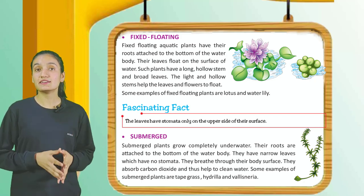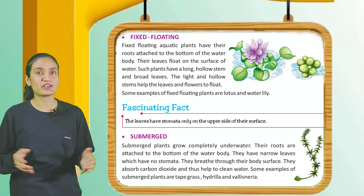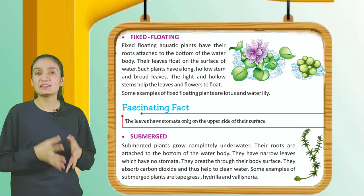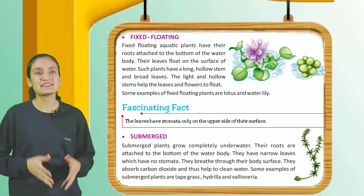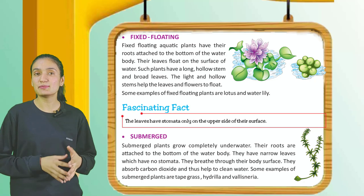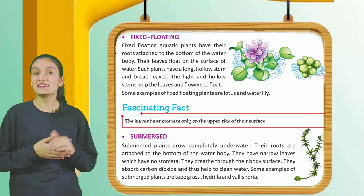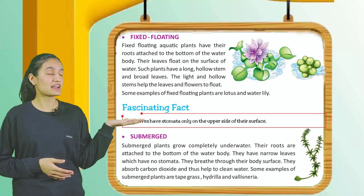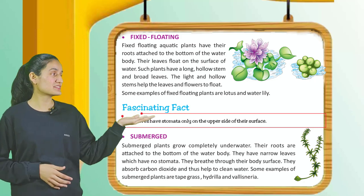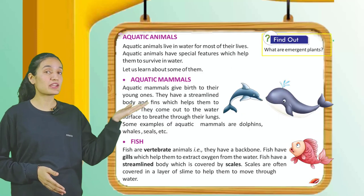Submerged: Submerged plants grow completely underwater. Their roots are attached to the bottom of the water body. They have narrow leaves which have no stomata. They breathe through their body surface. They absorb carbon dioxide and thus help to clean water. Some examples are tape grass, hydrilla, and Vallisneria.